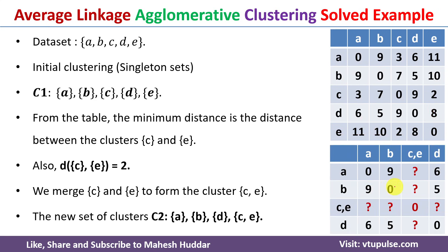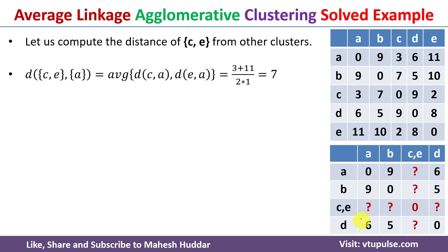After merging C and E, we now have four clusters: {A}, {B}, {D}, and {C,E}. Since C and E have been merged, we do not know the distances from the new cluster CE to A, B, and D — those need to be calculated using average linkage. The distance from CE to A is the average of the distance from C to A and the distance from E to A. The distance from C to A is 3, and the distance from E to A is 11.